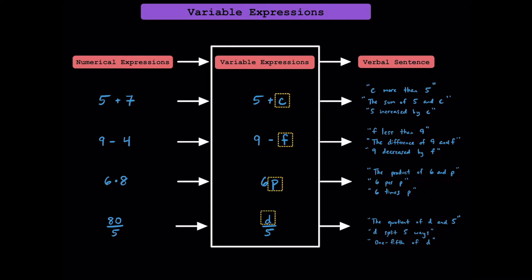Here are some examples for you to look at. Notice how we use lowercase letters as variables. In each of these four variable expressions, C, F, P, and D all represent some unknown number. It's unknown to us because it can change — in different scenarios, these variables can represent different numbers.